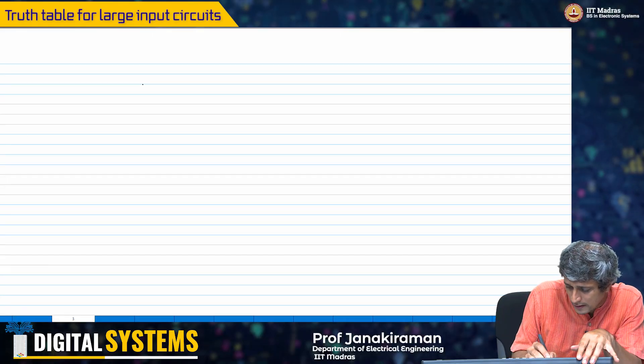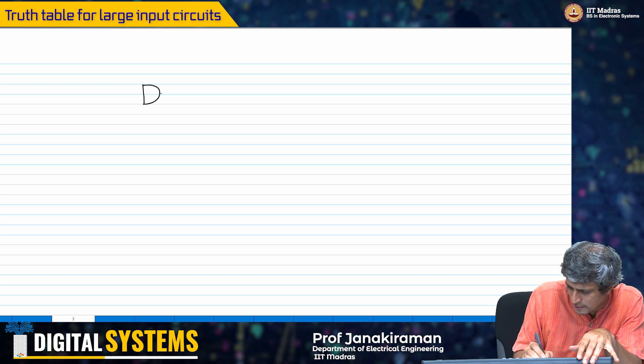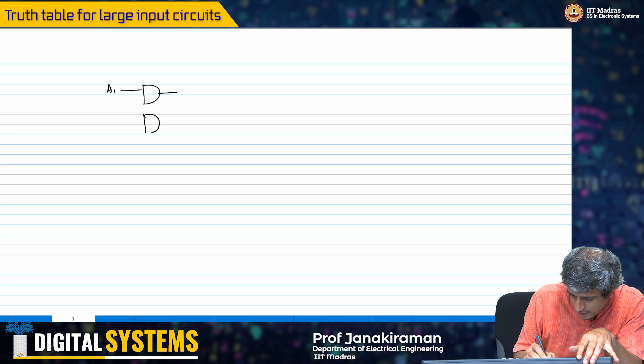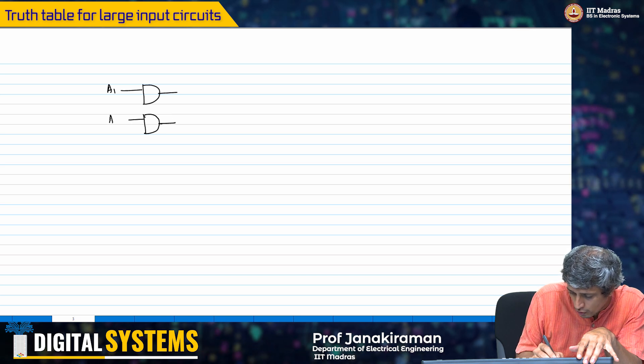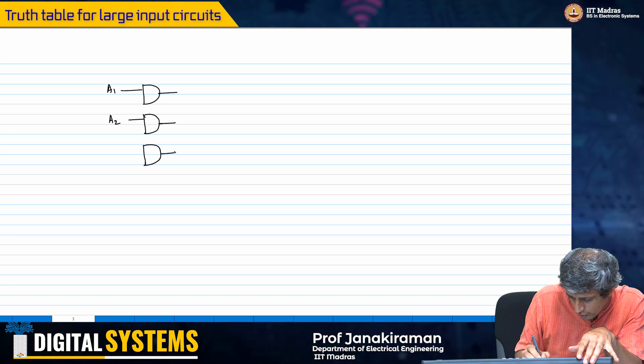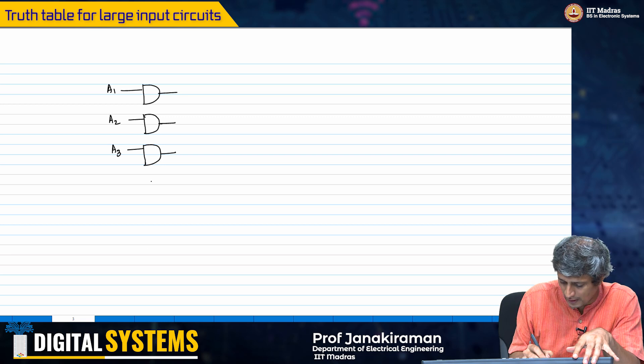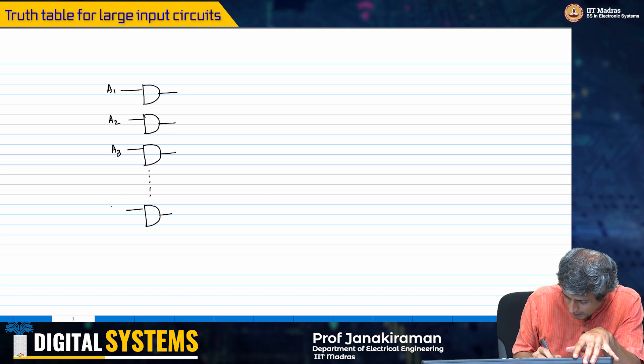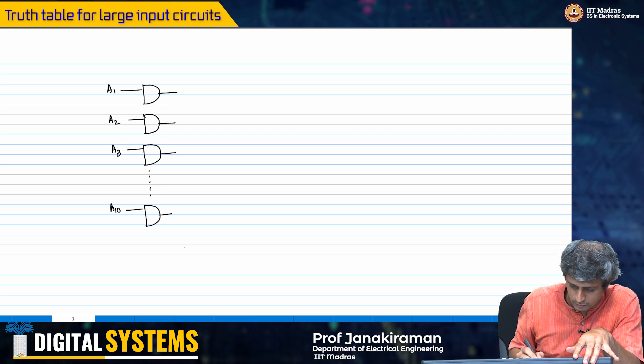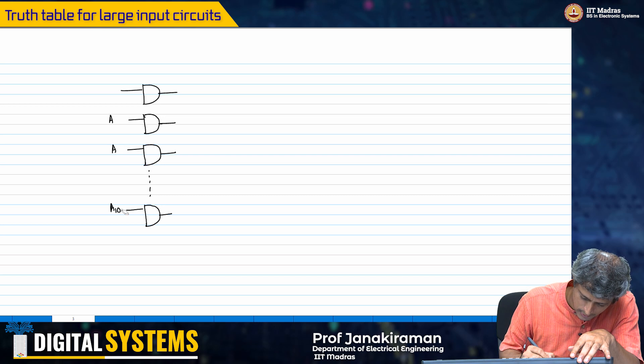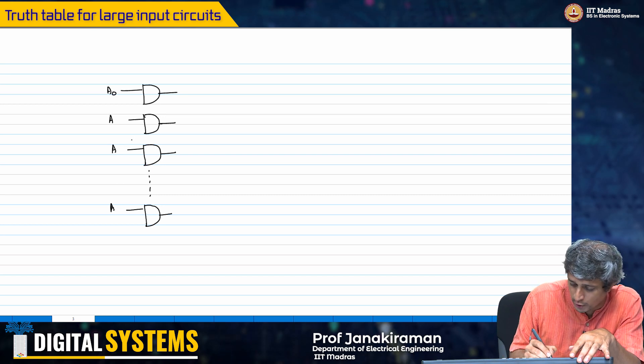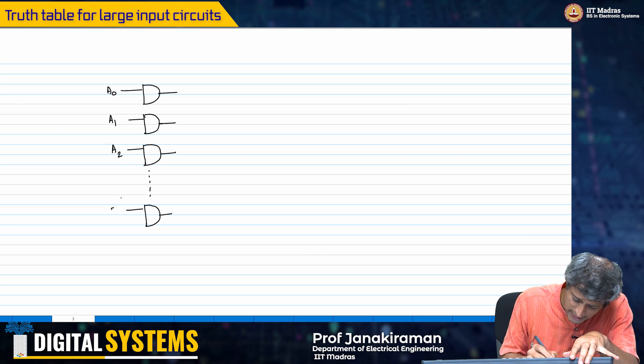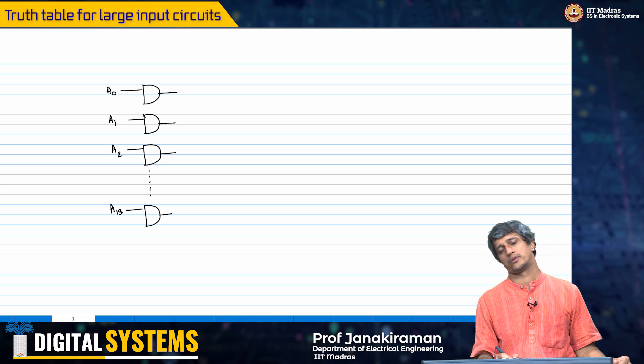Let us look at another example here. I have an input gate, a simple AND gate with inputs A1, A2, A3, and so on, all the way to A19. So that's 20 inputs.